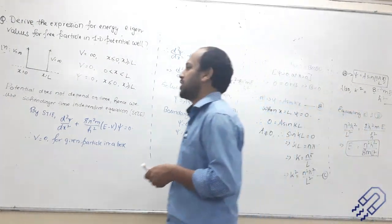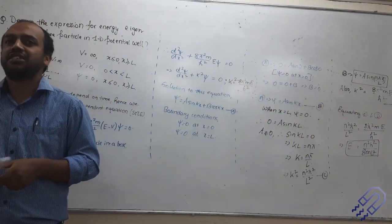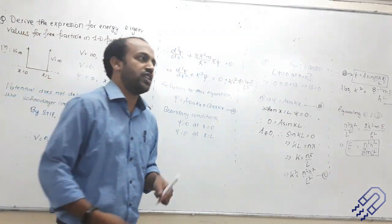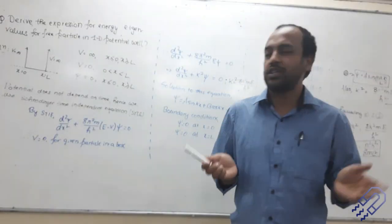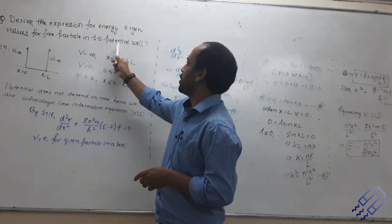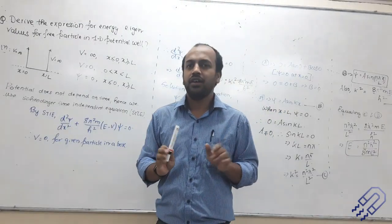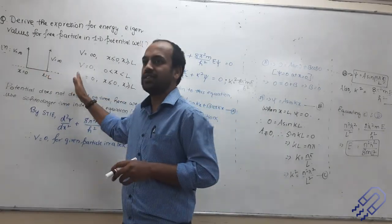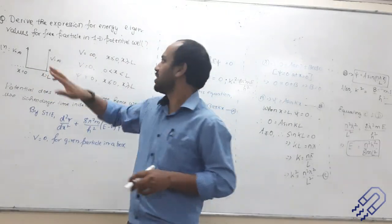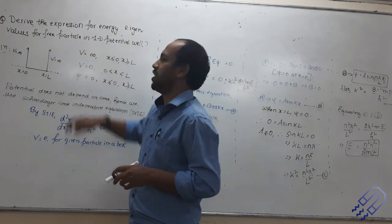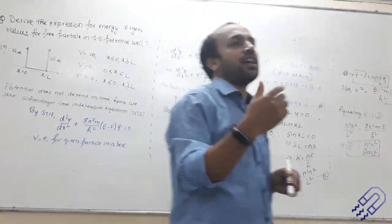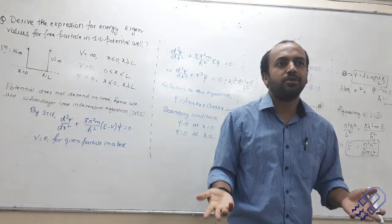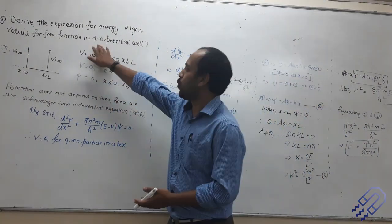Sometimes they also say the wall is of infinite height — infinite height means I cannot escape. So I am confined within this; that means it is a potential well. One dimension means the motion is only along the x-axis — I am not talking about y-axis or z-axis movement. That is why it is called a one-dimensional potential. At this level, when you start with quantum mechanics, this is what you begin with. In reality it is three-dimensional, but here we are going to do one-dimensional.